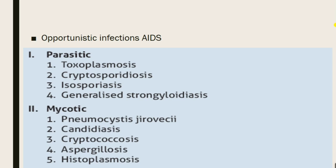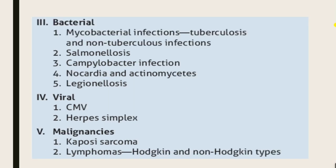Opportunistic infections associated with AIDS include parasitic infections such as toxoplasmosis, cryptosporidiosis, isosporiasis, and generalized strongyloidiasis. Mycotic or fungal infections include Pneumocystis jirovecii pneumonia, candidiasis, cryptococcosis, aspergillosis, and histoplasmosis. Bacterial infections include mycobacterial infections including tuberculosis and non-tuberculosis, salmonellosis, Campylobacter infection, Nocardia, actinomyces, and Legionella. Viral infections include cytomegalovirus and herpes simplex virus. Malignancies include Kaposi's sarcoma and lymphomas, both Hodgkin's and non-Hodgkin's type.